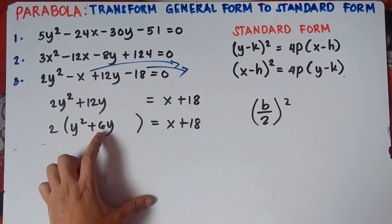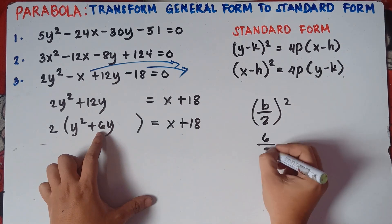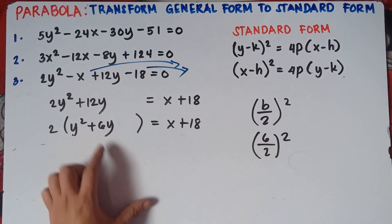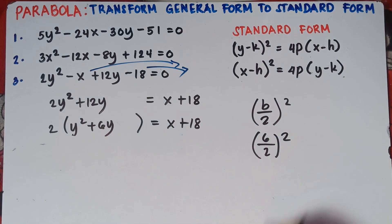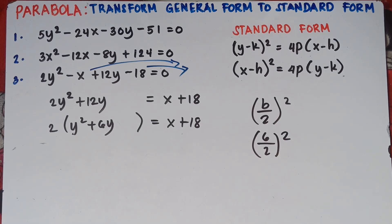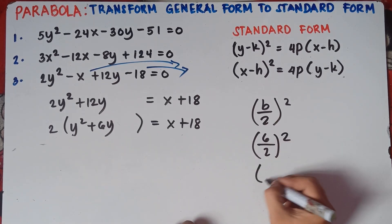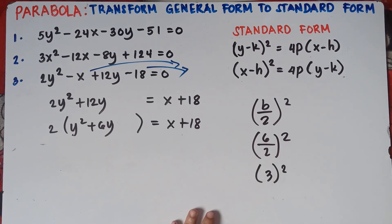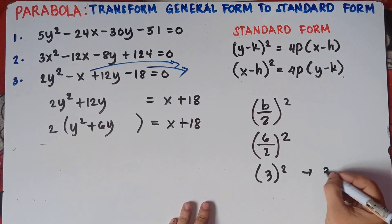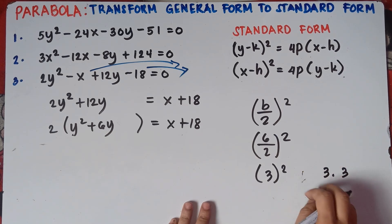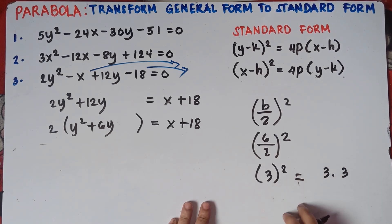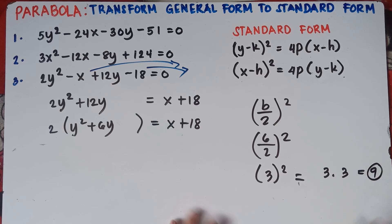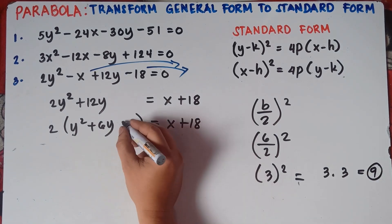So 6 divided by 2, quantity squared. 6 divided by 2 is 3, quantity squared. And 3 squared means 3 times 3 — do not forget, it does not mean 3 times 2. 3 times 3 is 9. So therefore, we need to add 9.